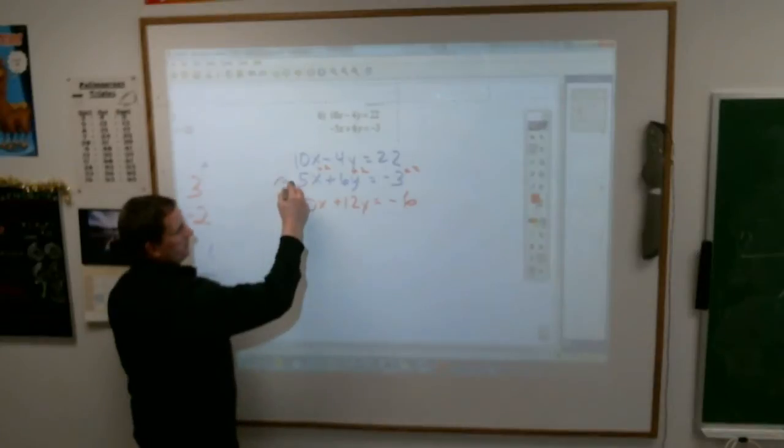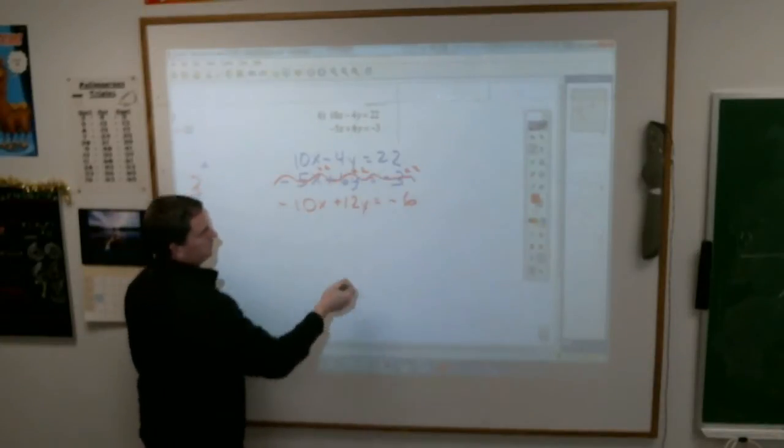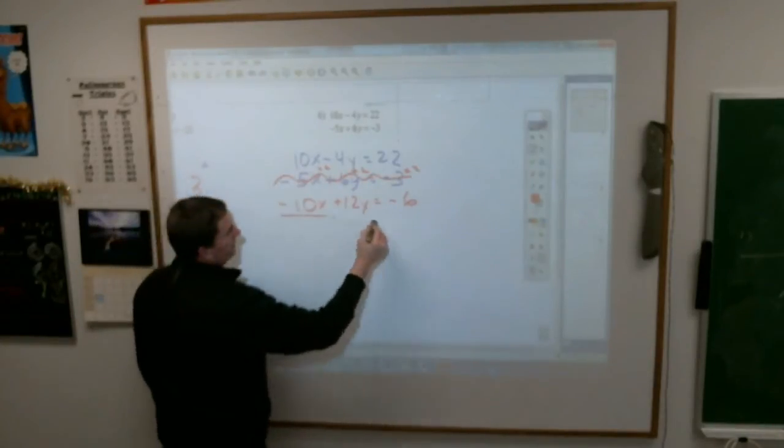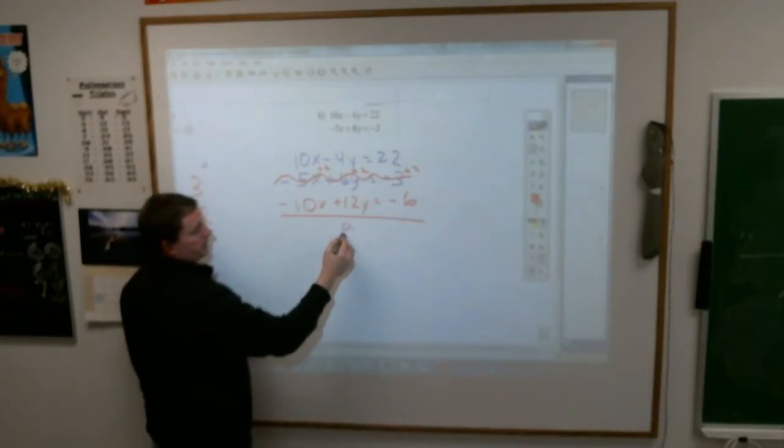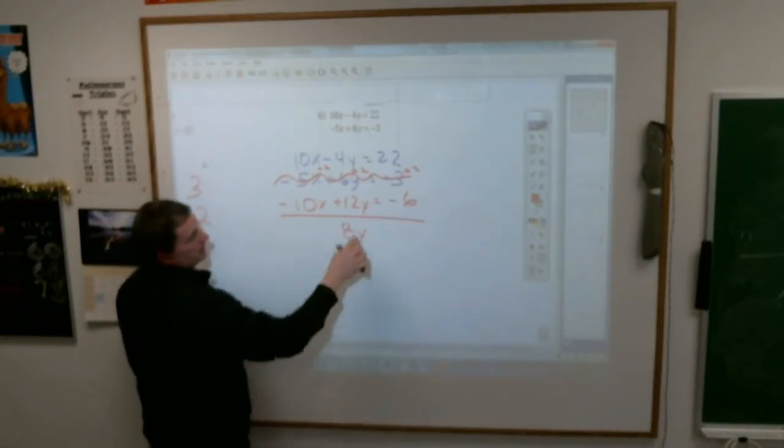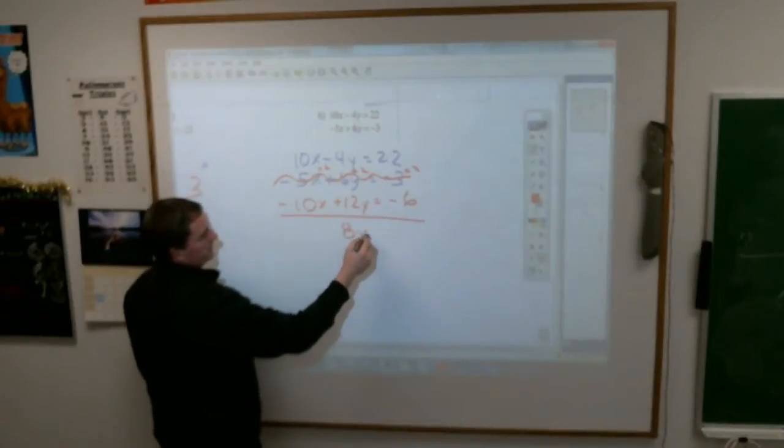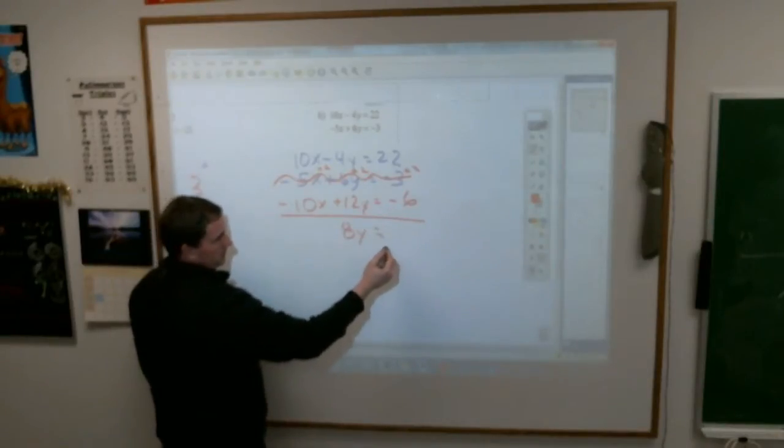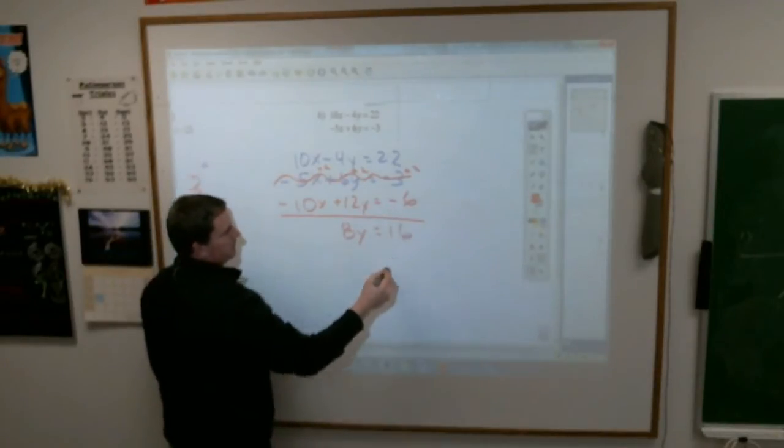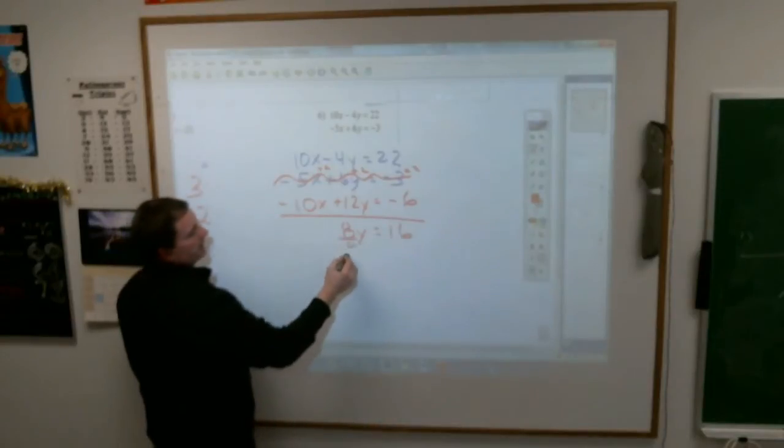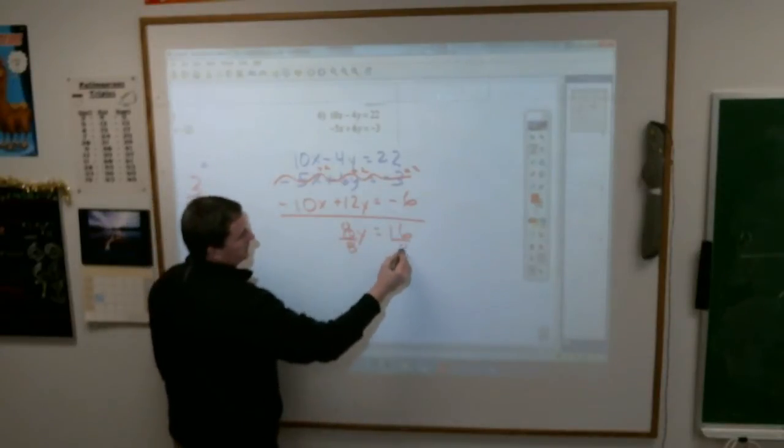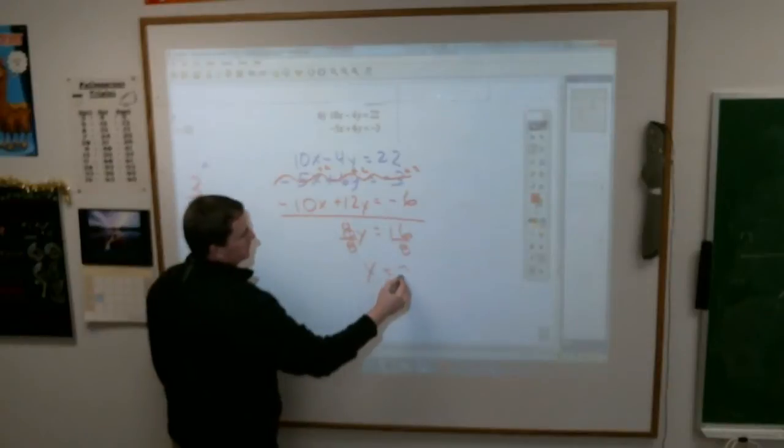So we're not thinking about this equation anymore. X's cross off. Y's give me an 8y. 22 minus 6, 17, lucky for us. Divide by 8. Divide by 8. Y equals 2.